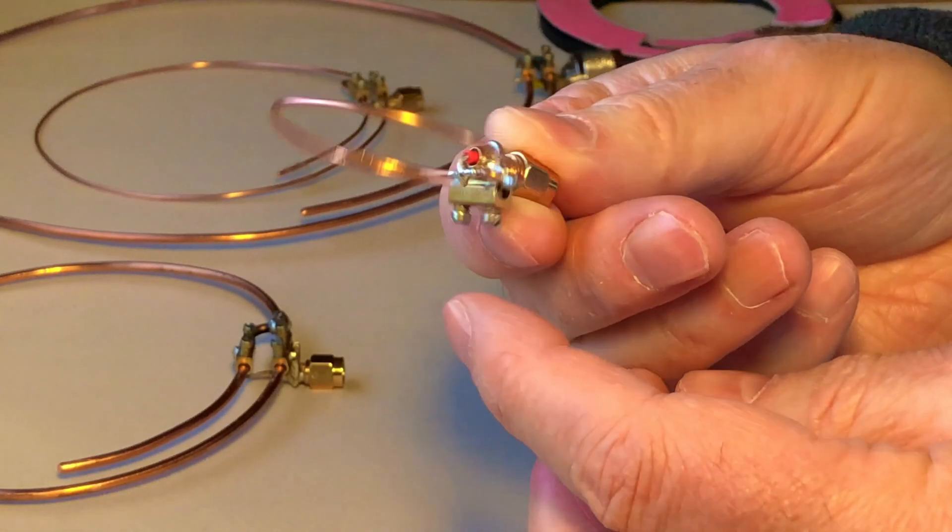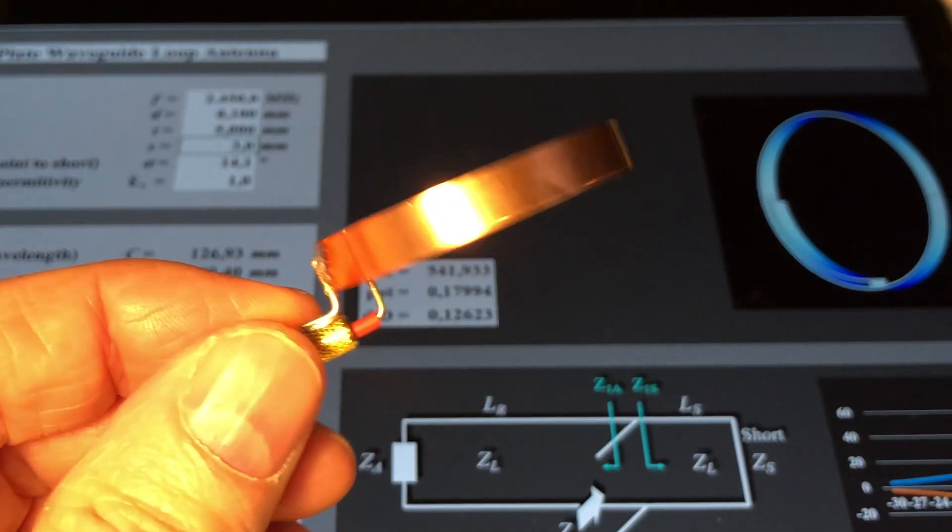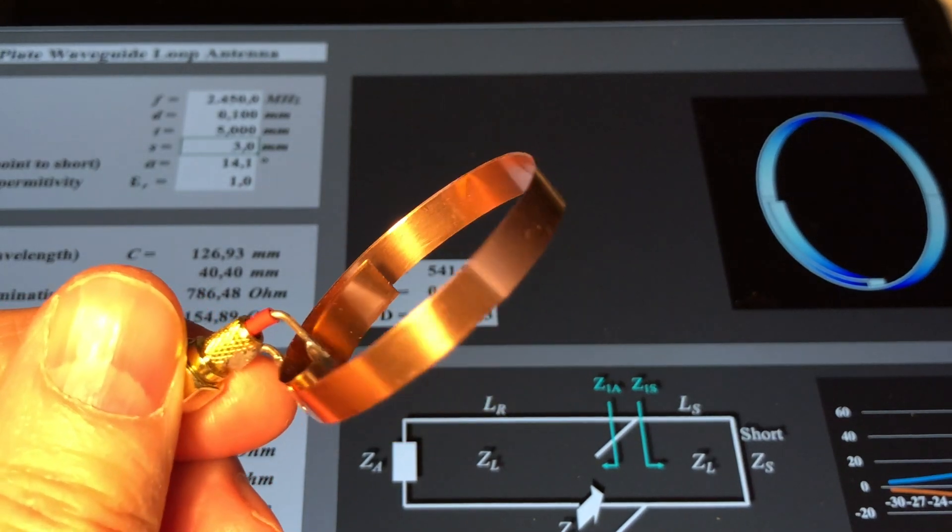We successfully built lambda loops from wire, copper tape and aluminum foil some time ago. Indeed, their properties improved the reception of a LoRa and an SDR receiver.